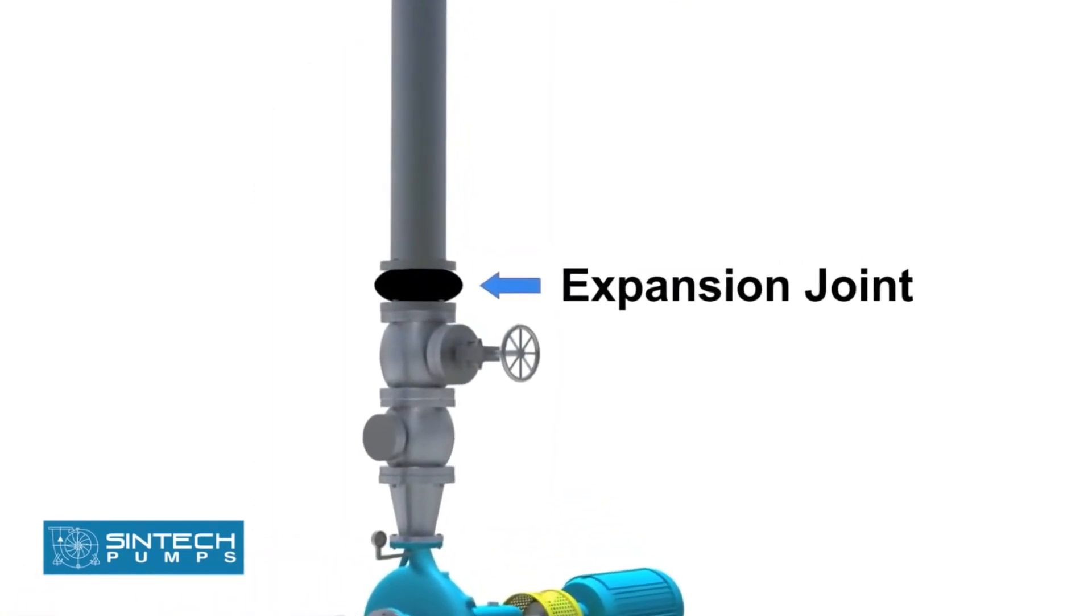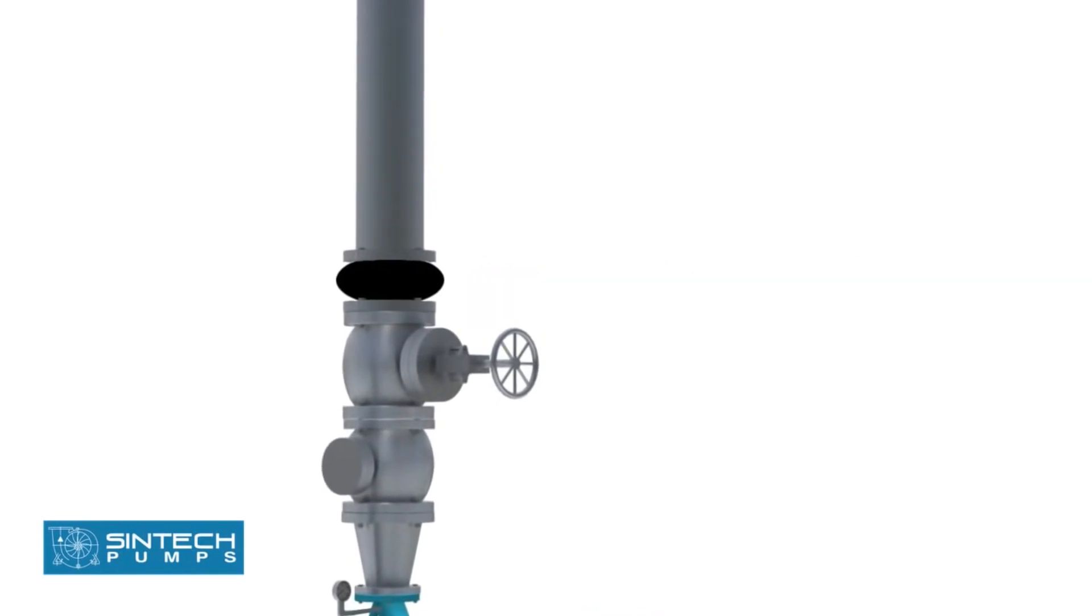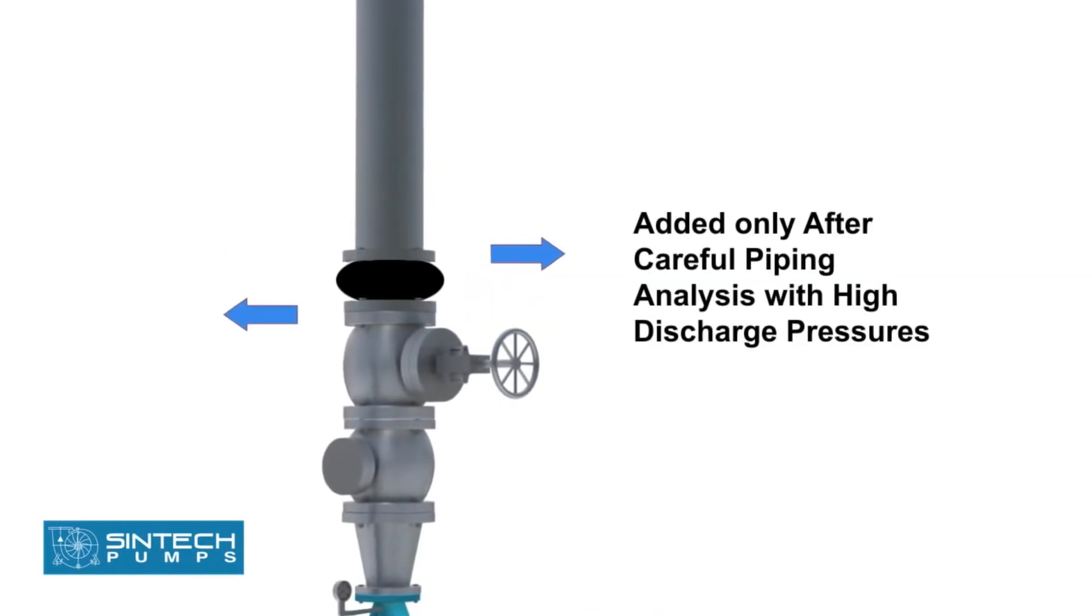Expansion joints may be used only after a careful piping analysis, especially when the discharge pressures are on the higher side.